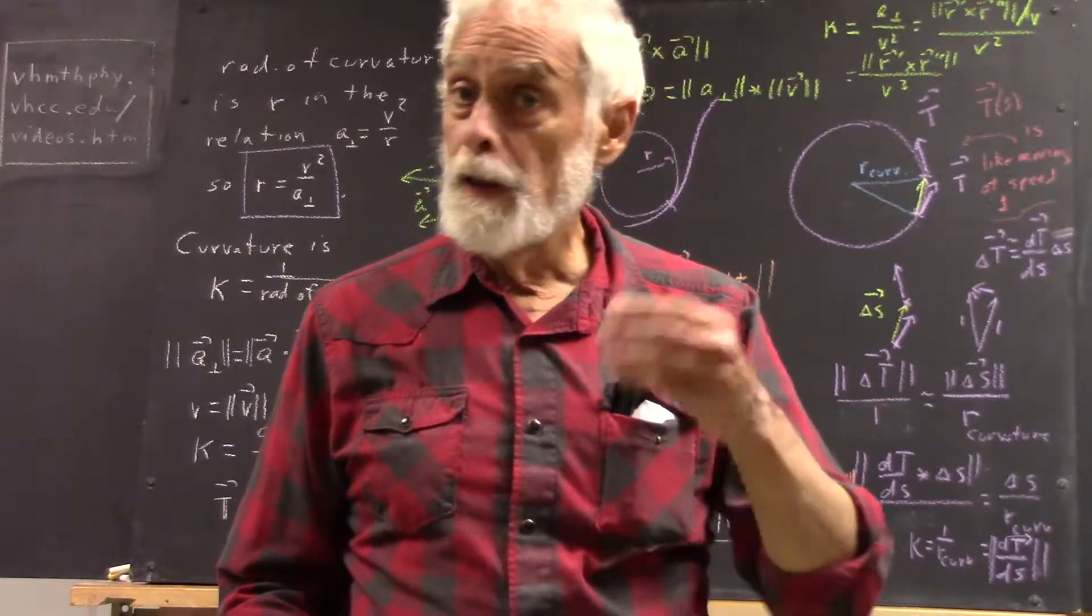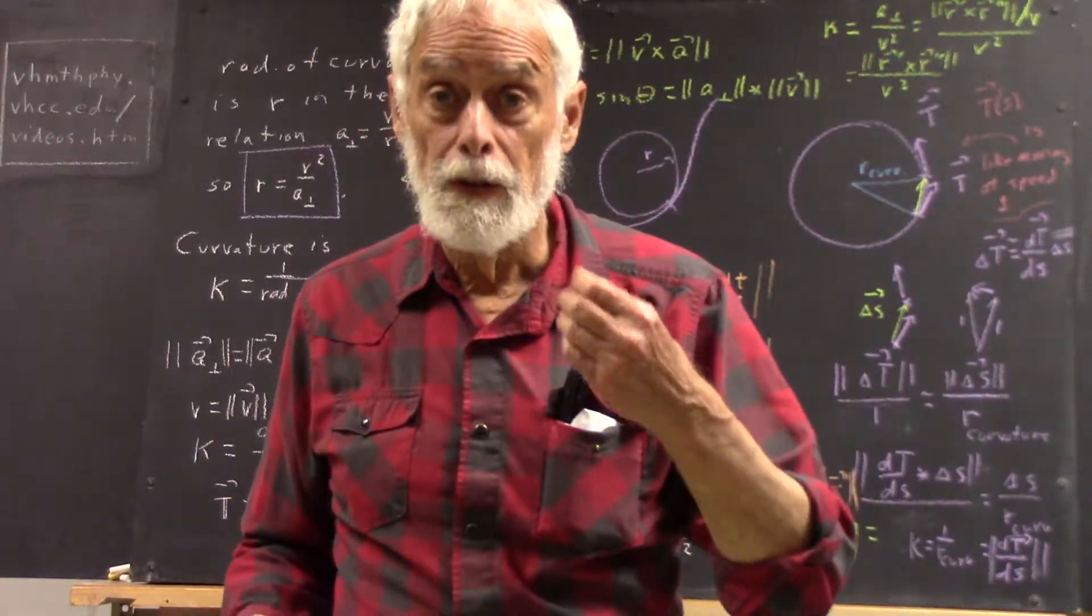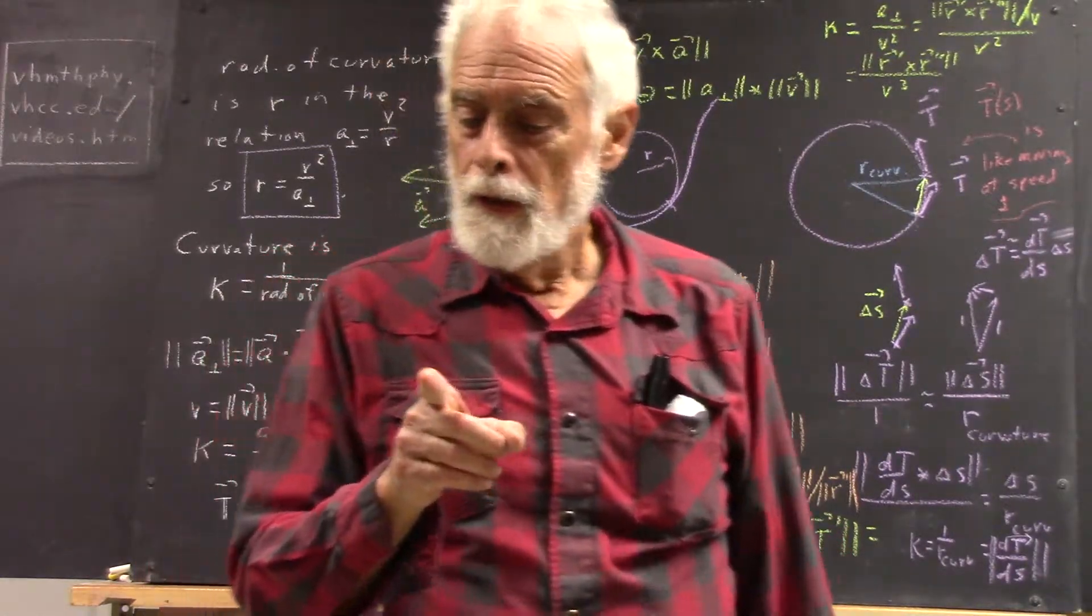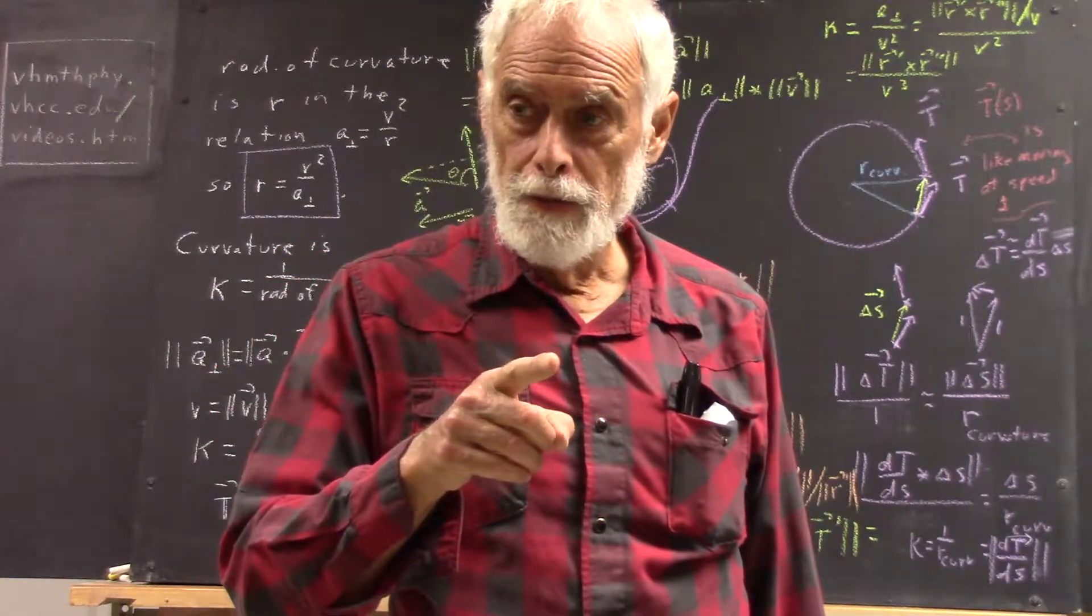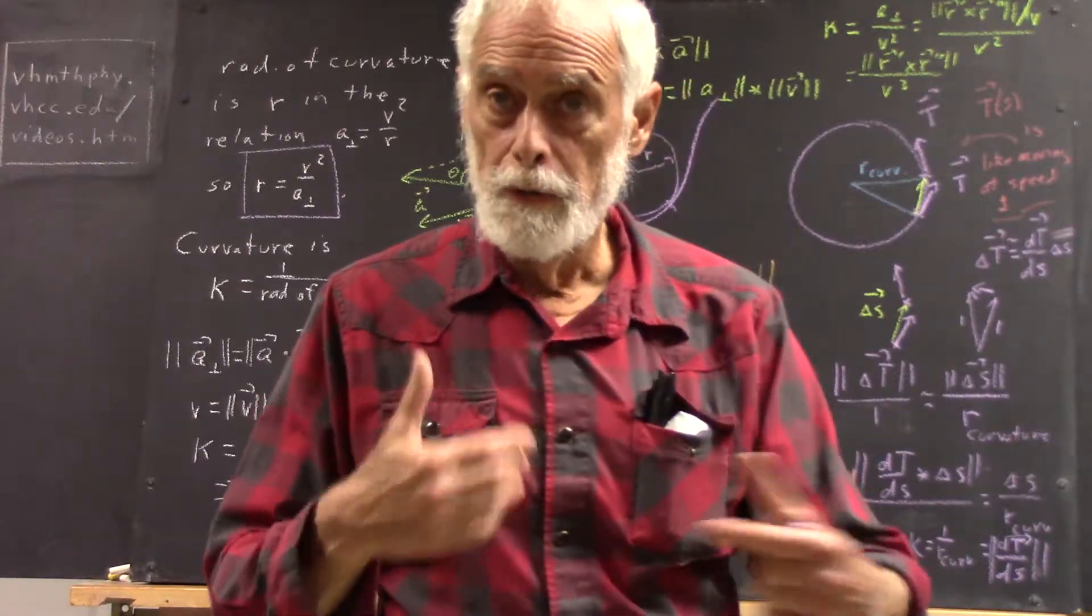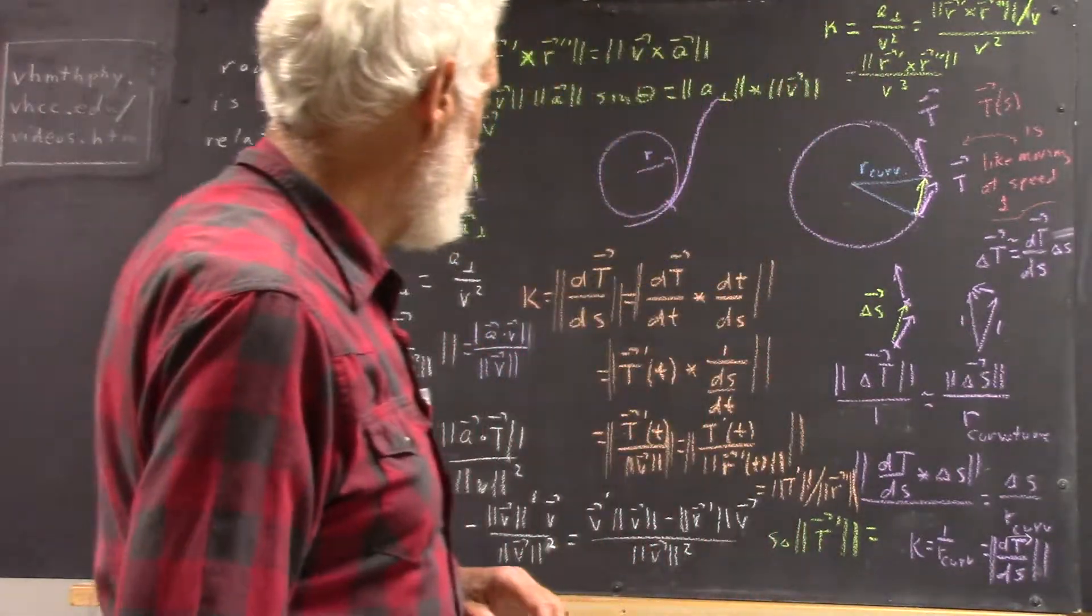Turns out, if I go around the curve at a constant unit speed, then the rate of change of my unit tangent vector is just the curvature, the reciprocal of the radius of the circle. And that's fairly easy to work out.